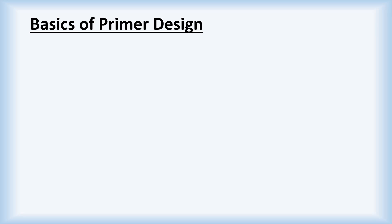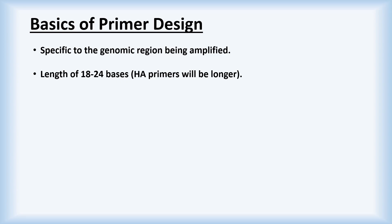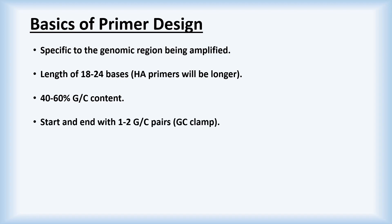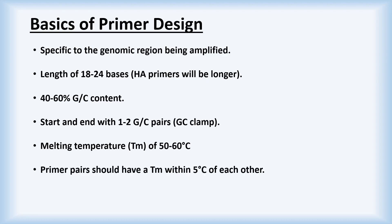Here is a basic list of factors to consider when designing primers. Primers should be specific to the genomic region being amplified. Their sequences should be between 18 and 24 bases in length. Primers should have a GC content of between 40 and 60%. Their sequences should have 1 or 2 G or C bases at their ends — this is known as the GC clamp. Primers should be designed with melting temperatures of between 50 and 60 degrees centigrade. The melting temperatures of the pairs should be within around 5 degrees of each other.